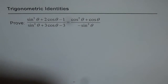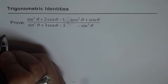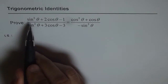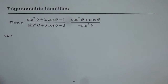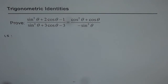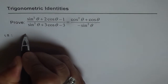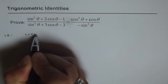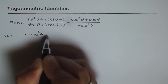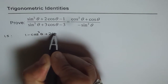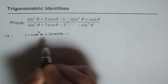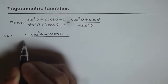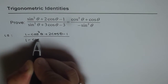So let's start with the left side. Left side is equal to sin²θ + 2cosθ − 1 divided by sin²θ + 3cosθ − 3. We can write sin²θ as 1 − cos²θ. So we will write sin²θ as 1 − cos²θ and then we have 2cosθ − 1 in the numerator, and in the denominator also we will write it in terms of cos²θ.